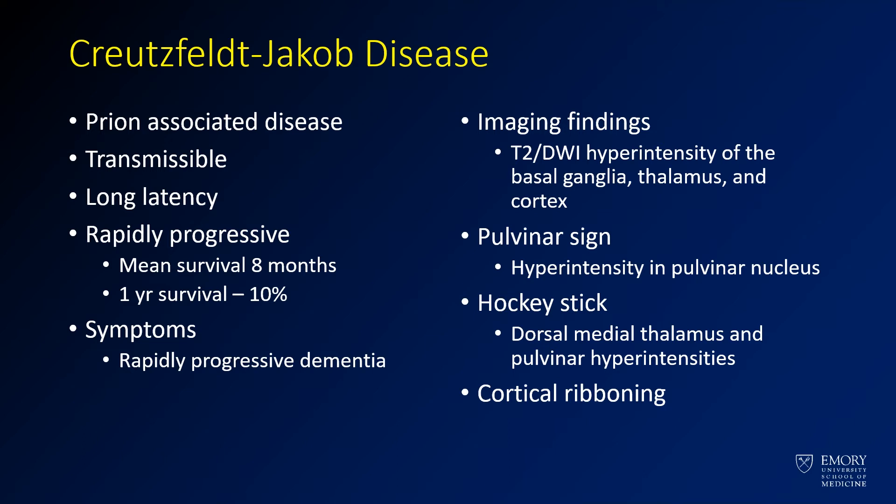Once it occurs, it is rapidly progressive with a very short survival time. The symptoms that you typically get are rapidly progressive dementia, so if you have a progressive dementia in a very young patient, then you should think about that.